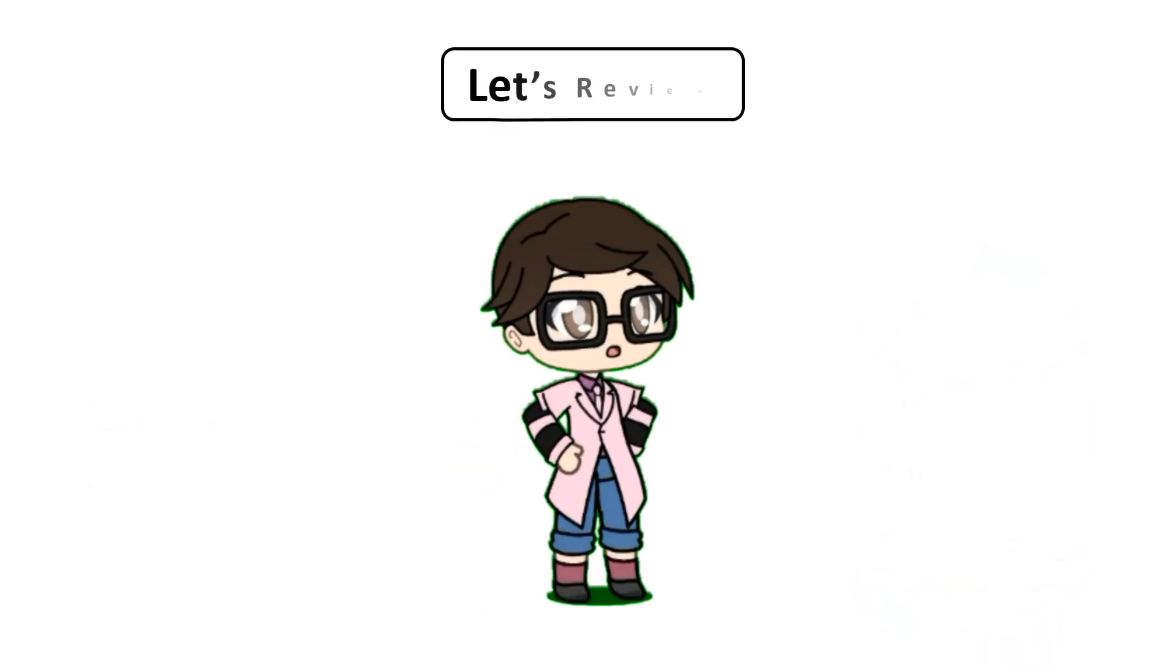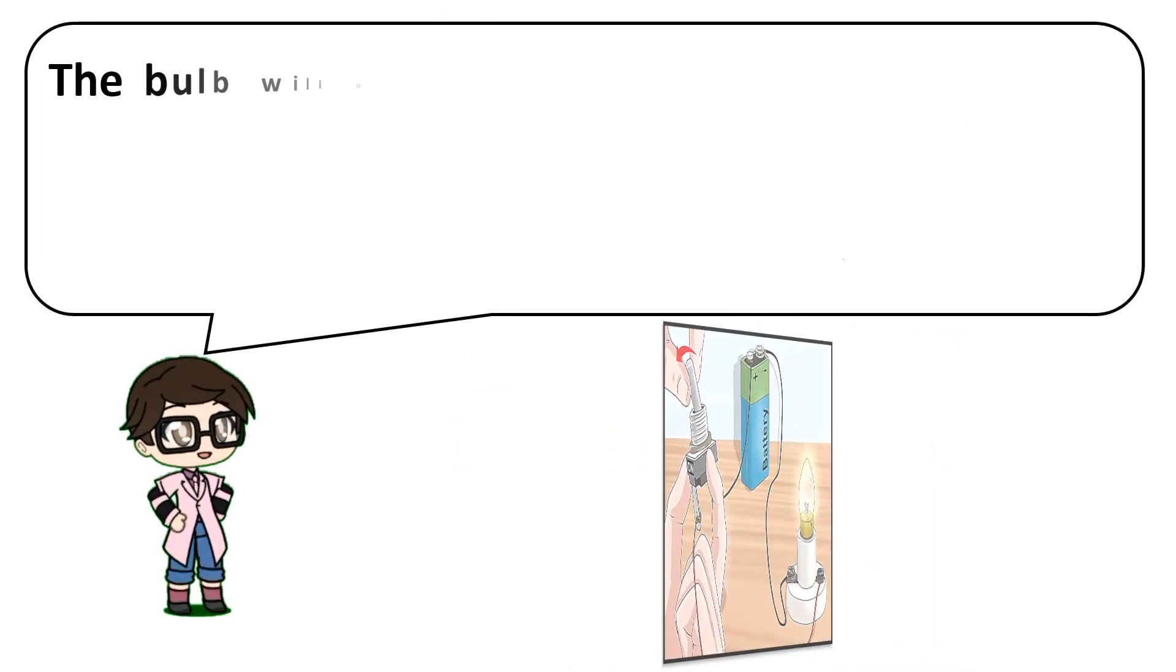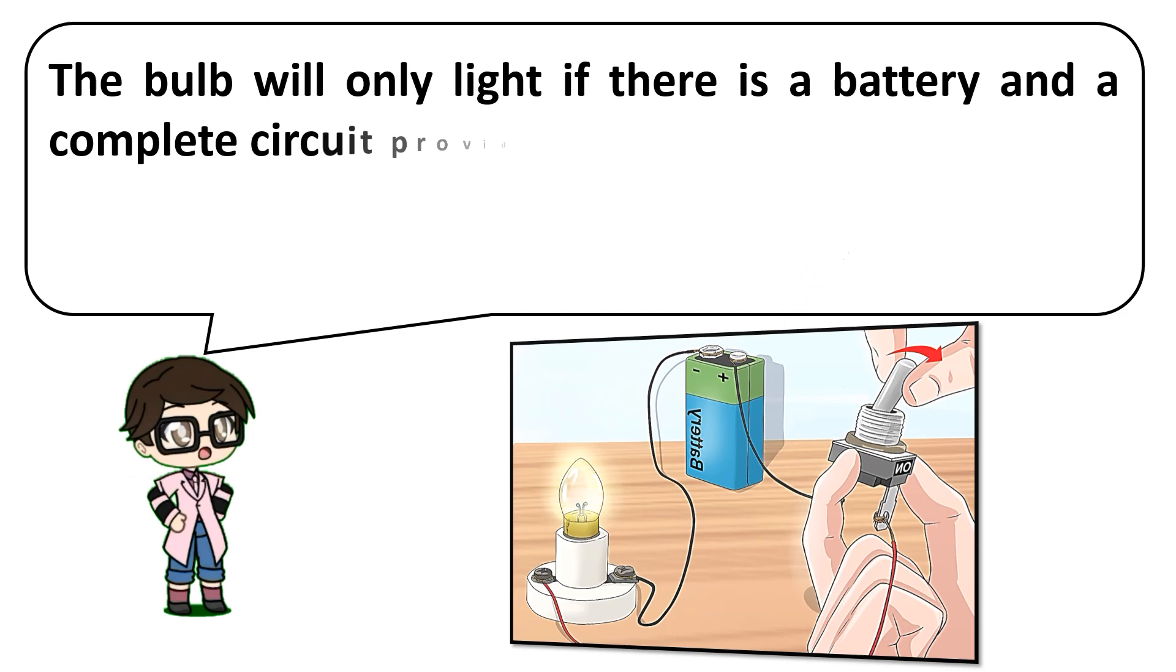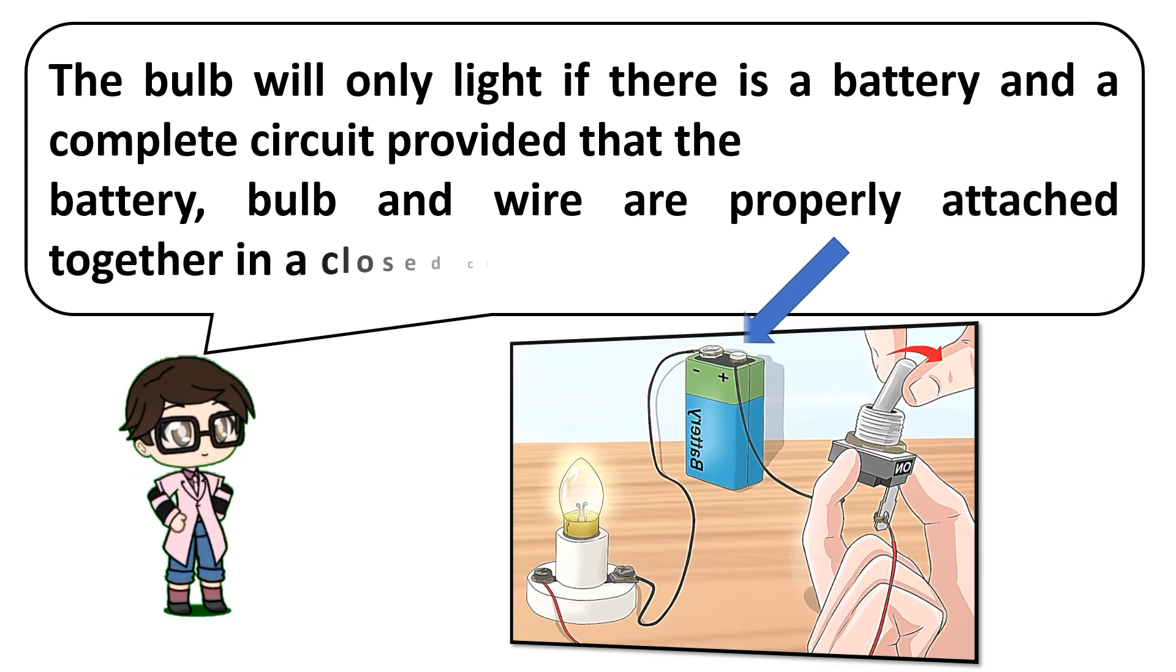Let's review. The bulb will light if there is a battery on a complete circuit, provided that the battery, bulb, and wire are properly attached together in a closed circuit.